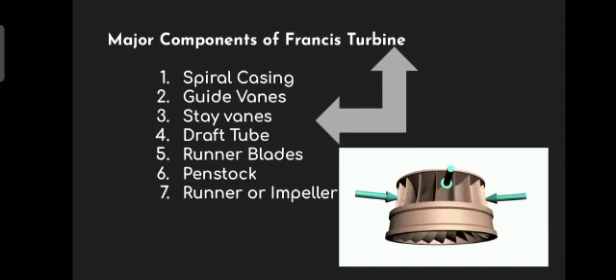Major components of Francis turbine: spiral casing, guide vanes, stay vanes, draft tube, runner blades, penstock, and runner or impeller.